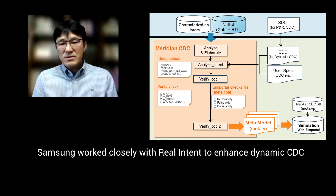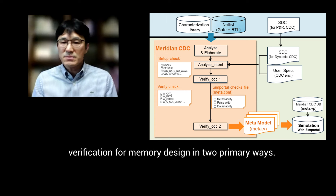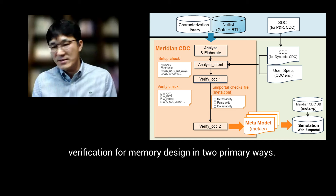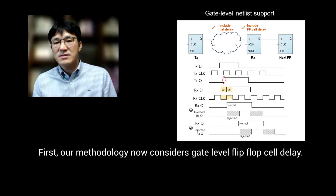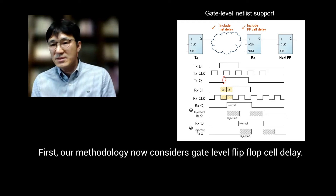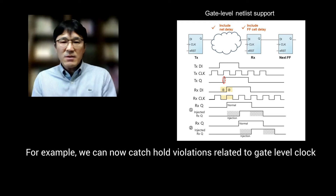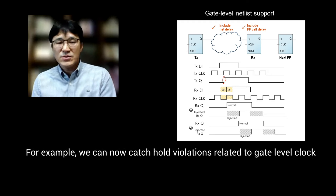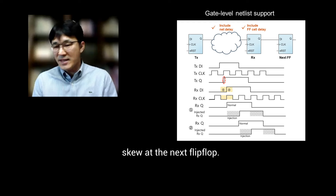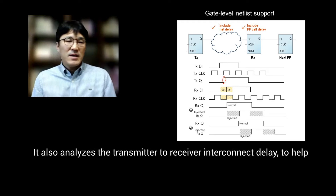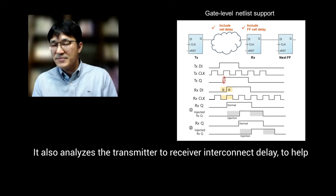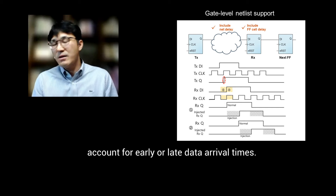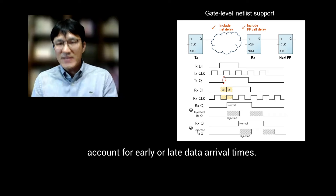Samsung worked closely with Real Intent to enhance dynamic CDC verification for memory design in two primary ways. First, our methodology now considers gate-level clock cell delays. For example, we can now catch a hold violation related to gate-level clock skew at the flip-flop. It also analyzes the transmitter-to-receiver interconnect delay to help account for earlier data arrival times.